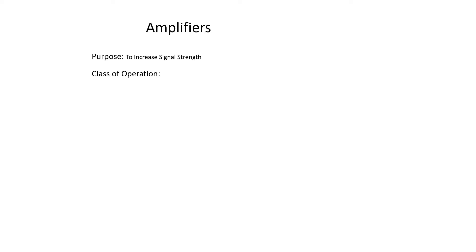The purpose of an amplifier is to increase signal strength. Before we get into their configuration, let's talk class of operation for a minute. When talking about class of operation, we only teach three different ones — there are a whole lot more, but we're only going to cover three. The first one is class A operation.